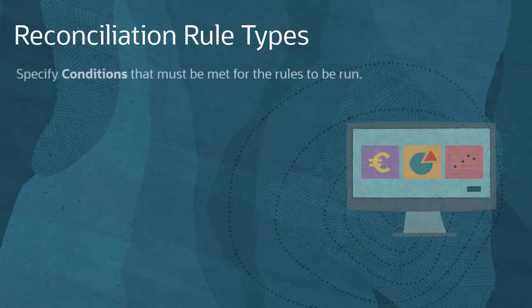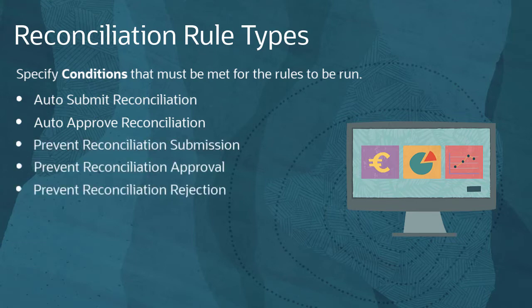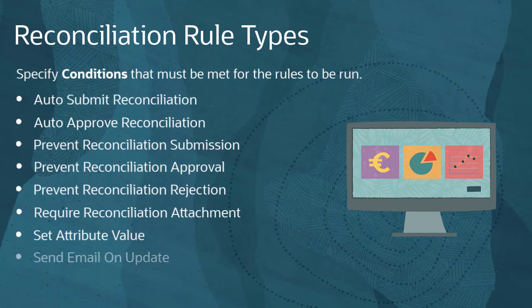For each rule type, you specify conditions that must be met for the rule to run. Auto-submit and auto-approve rules perform an automatic submission or approval when the specified conditions are met. Prevent rules prevent users from performing an action when the specified conditions are met — you can prevent submission, approval, and rejection of reconciliations. Require reconciliation attachment rules prevent a reconciliation from being submitted unless a file has been attached. Set attribute value rules cause a reconciliation attribute to be set to a specified value. Send email on update rules send an email to specified users when updates to attribute values for a reconciliation meet specified criteria.